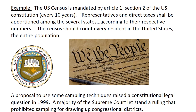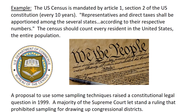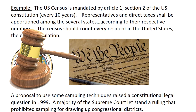The United States Census is mandated by Article 1, Section 2 of the US Constitution to conduct a census of the entire population of the United States every 10 years. It says representatives and direct taxes shall be apportioned among the several states according to their respective numbers. The census should count every resident in the United States — the whole population. Back in 1999, there was a proposal to use some sampling techniques, and this raised a big constitutional legal question. A majority of the Supreme Court let stand a ruling by a lower court that prohibited sampling for drawing up congressional districts.